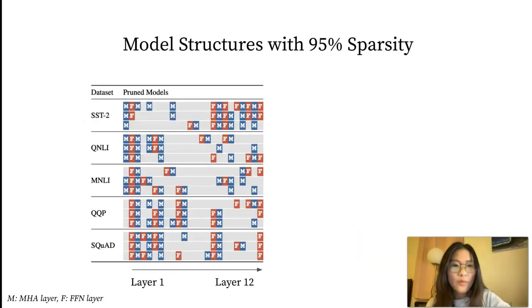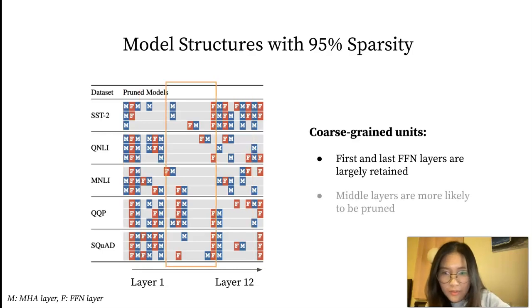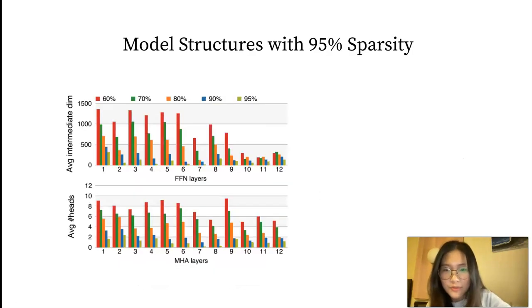To understand what the final model structures are like, we plot the remaining multi-head attention layers and the feed-forward layers for 5 tasks across 3 runs. All these models have a sparsity around 95%. Each row denotes a sequence of layers for one pruned model. We find that in terms of coarse-grained units, the first and last FFN layers are largely retained, while the middle layers are more likely to be pruned.